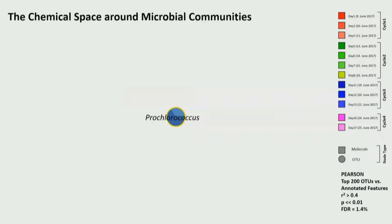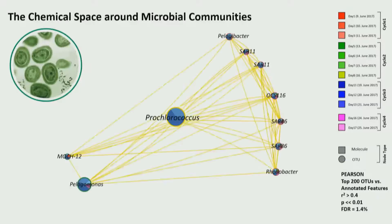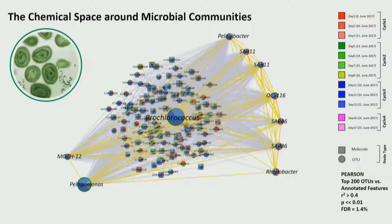We can start constructing networks of the microbial community. In this particular case, from a data set from the California Current Ecosystem, we observed cyanobacteria Prochlorococcus, and with correlation analysis we can map out the surrounding microbial community. We can also correlate this with the chemical space map.